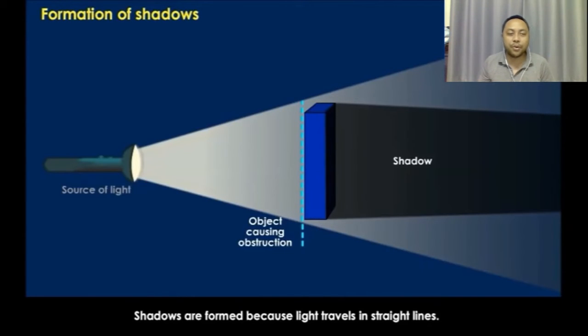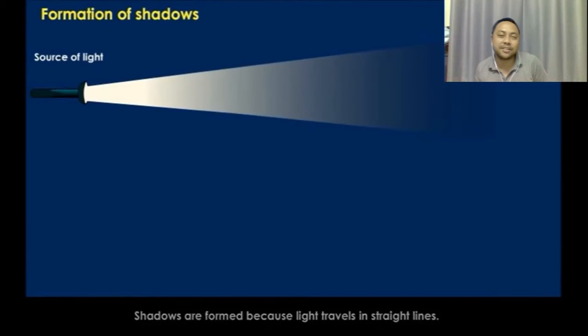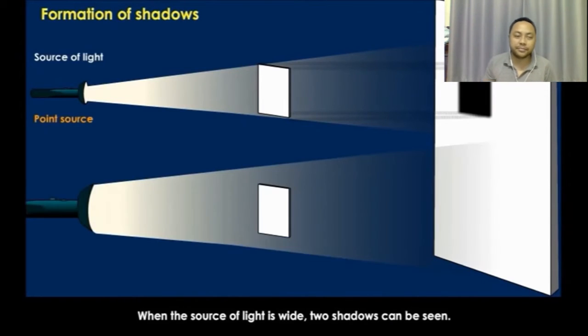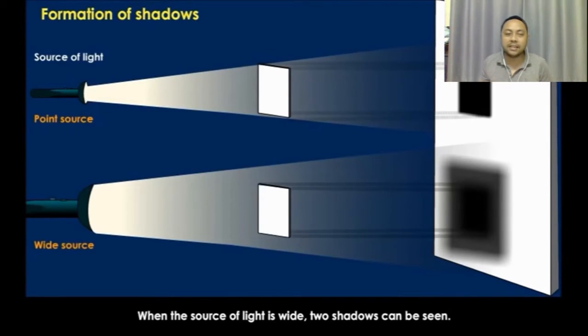Shadows are formed because light travels in straight lines. If the source of light is very small, that is a point source, then a sharp well-defined image is formed on the screen. When the source of light is wide, two shadows can be seen.